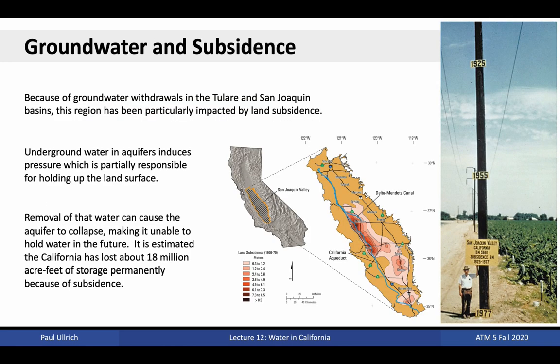The effects of groundwater overdraft are hard to see because the groundwater is largely invisible to us. However, one way we can see it directly is through ground subsidence — the sinking of the ground as underground aquifers are pumped dry and collapse. A famous photo from the Tulare Basin shows the magnitude of subsidence between 1925 and 1977 as measured by the U.S. Geological Survey. Ground subsidence has been most severe in the southern half of the Central Valley, with some regions experiencing subsidence of 8.5 meters or more over the 20th century. It is estimated that about 18 million acre-feet of storage was permanently lost because of subsidence.